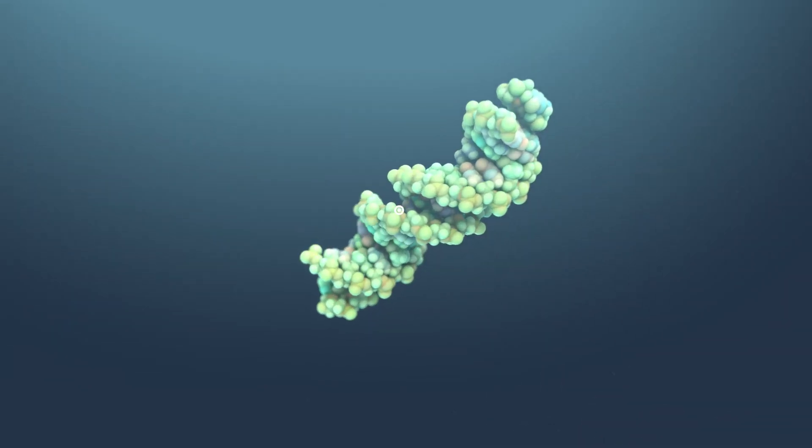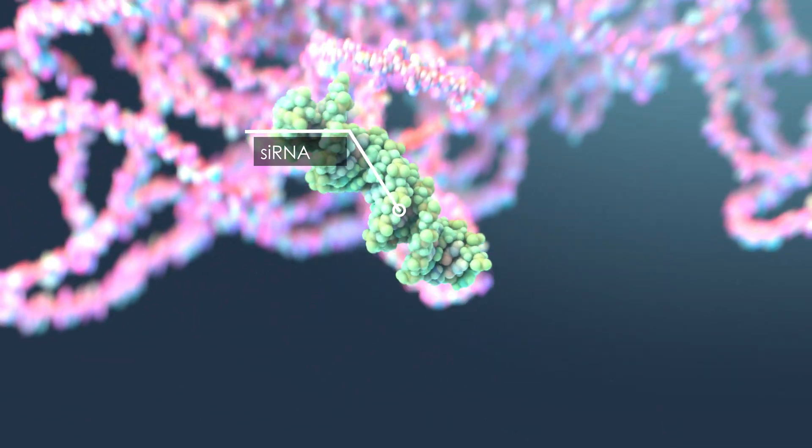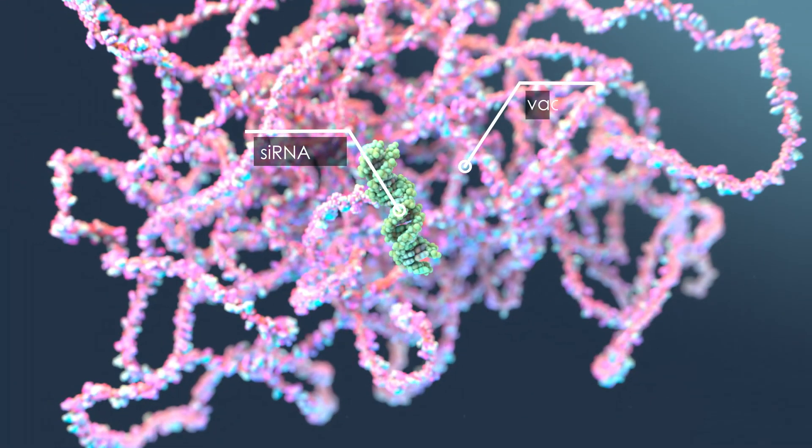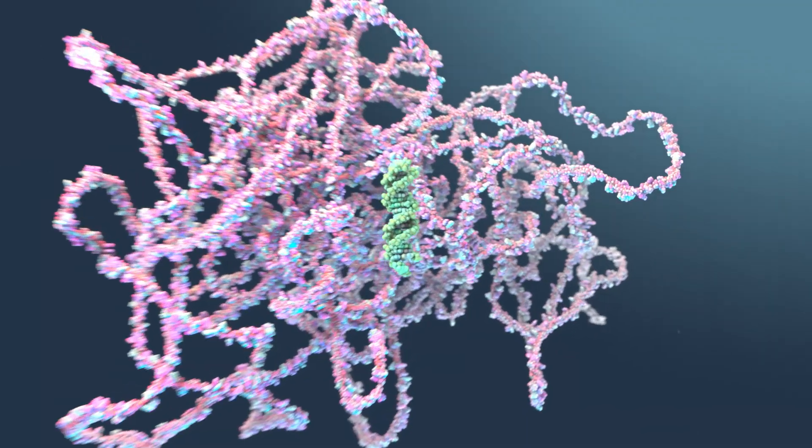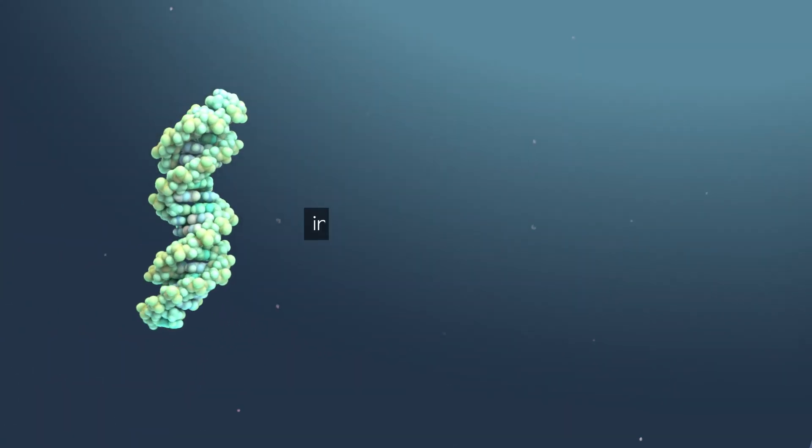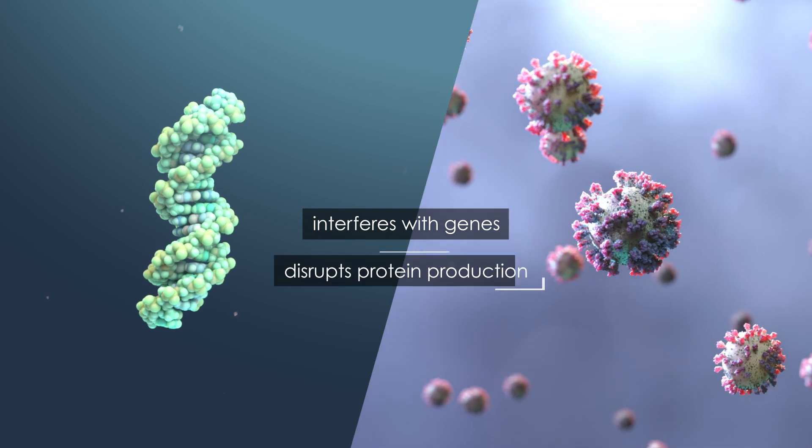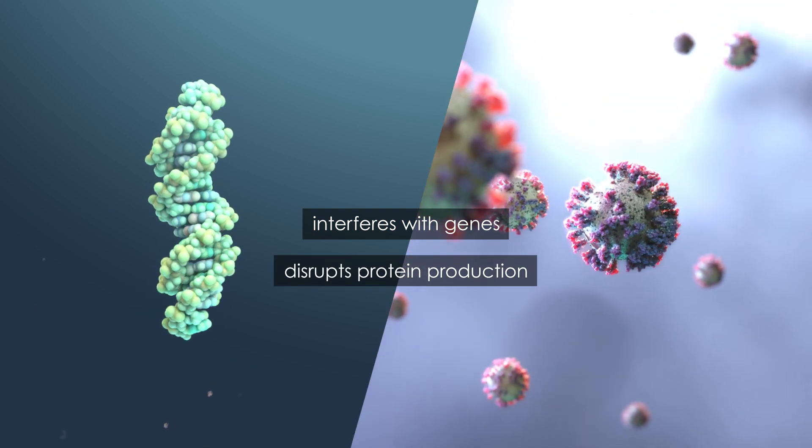It's a tiny type of RNA, much smaller than the mRNA used in vaccines. SiRNA interferes with genes and can disrupt the protein production of pathogens or hostile intruders, like viruses.